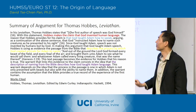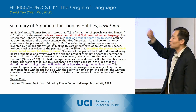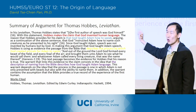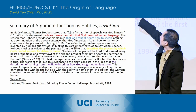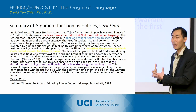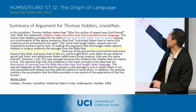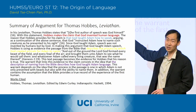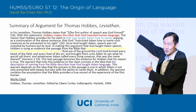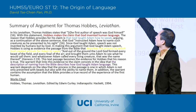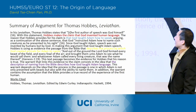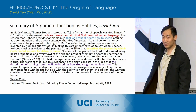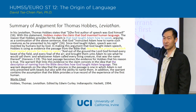You want to make sure — you definitely need to state each of those pieces in your own words. So you say how Hobbes makes the claim that God invented human language. You're using your own words to state the claim, the reason, the evidence. The best summaries will also include the quote from the text — for instance, 'the first author of speech was God himself' — and then you rephrase it in your own words.